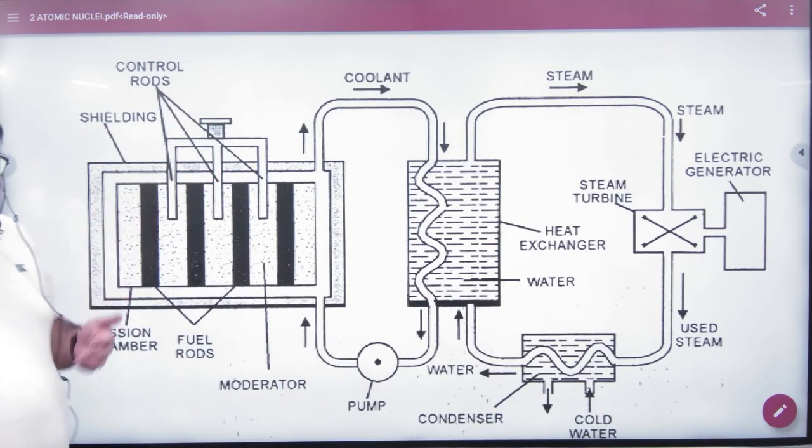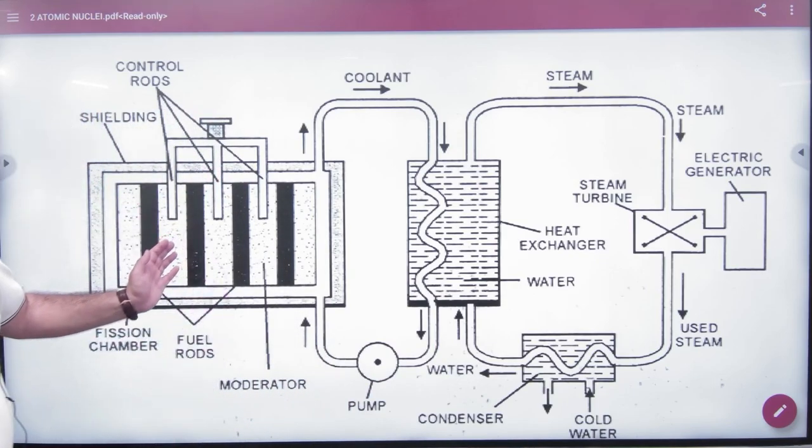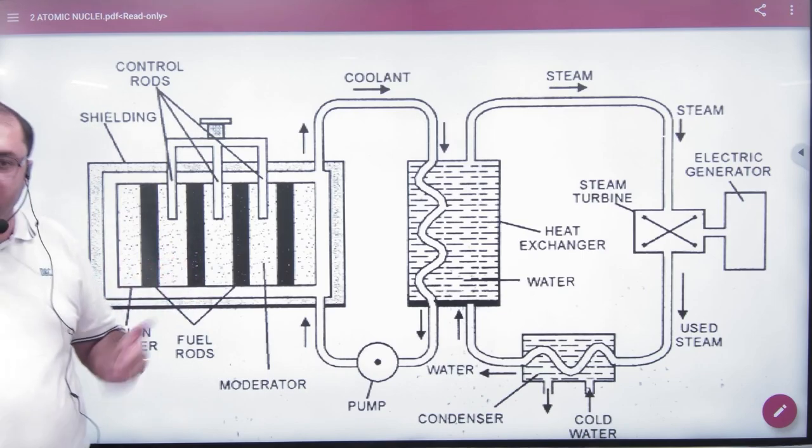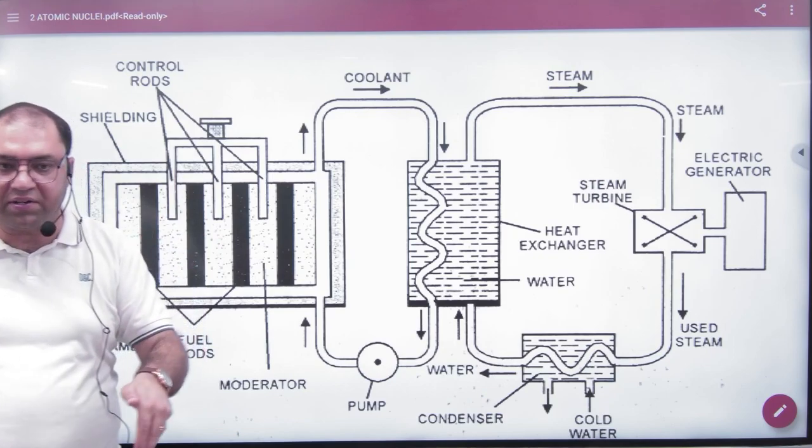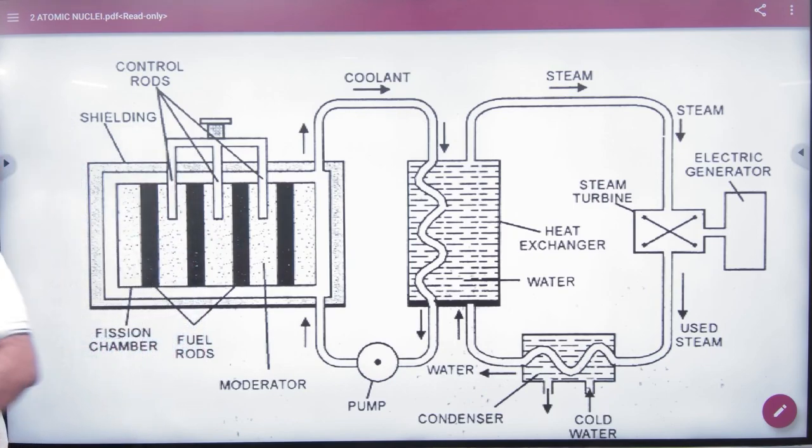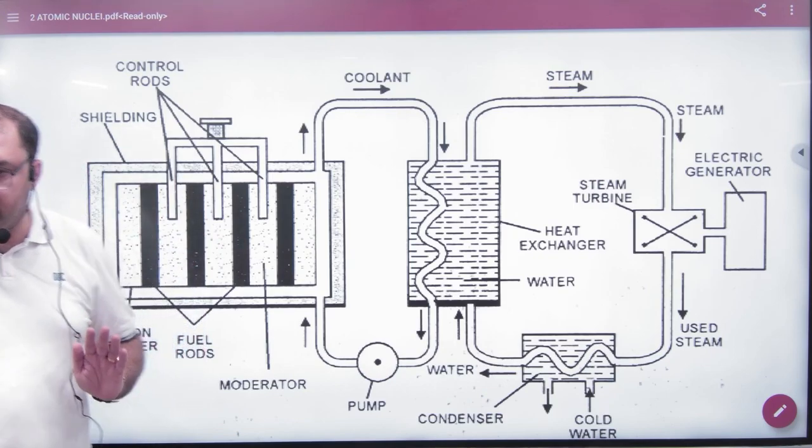The reaction must be controlled. Because it involves radioactivity. If it is uncontrolled, it will fail catastrophically. The control rods going down can control it. They can reduce it or increase it. So this is a nuclear reactor.